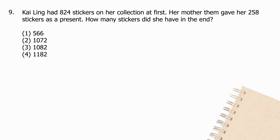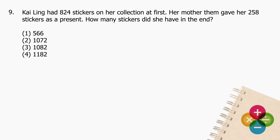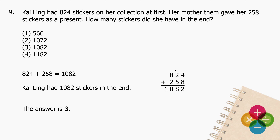Question 9: Kai Ling had 824 stickers in her collection at first. Her mother gave her 258 stickers as a present. How many stickers did she have in the end? Add 824 to 258 and the sum is 1082. Kai Ling had 1082 stickers in the end. The answer is 3.